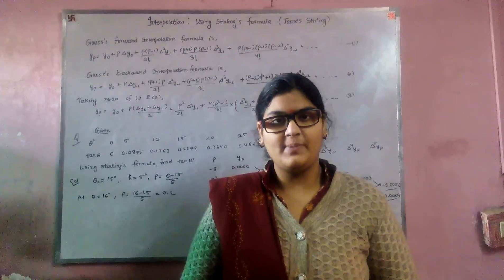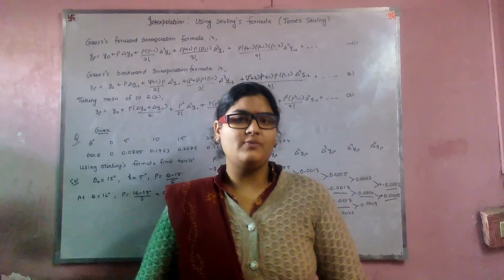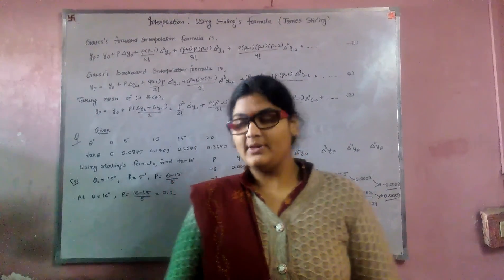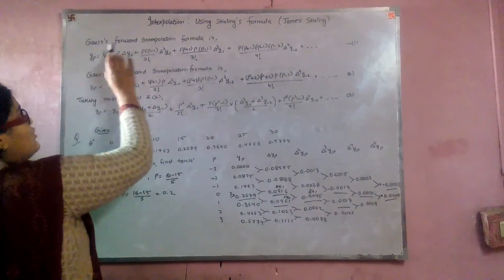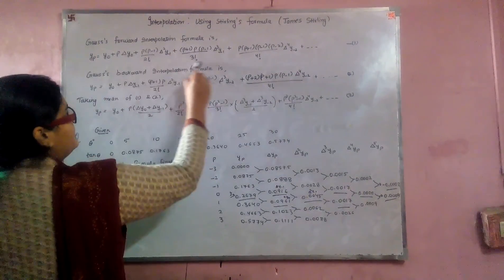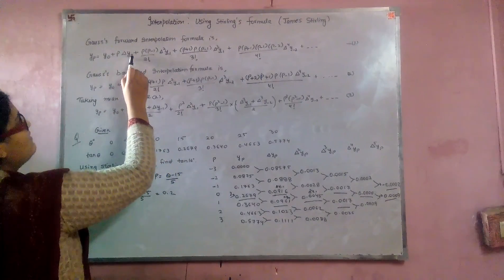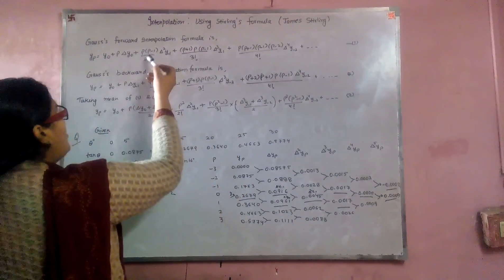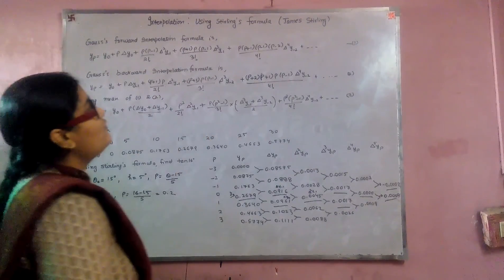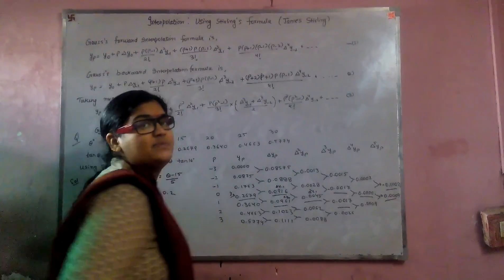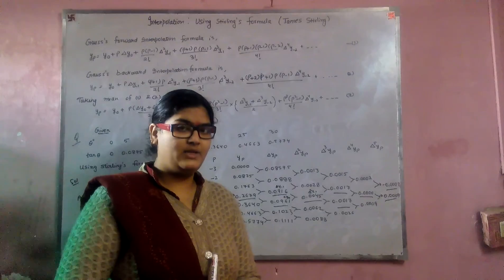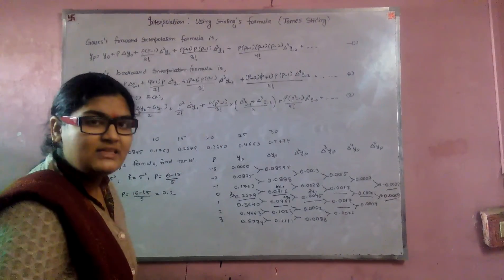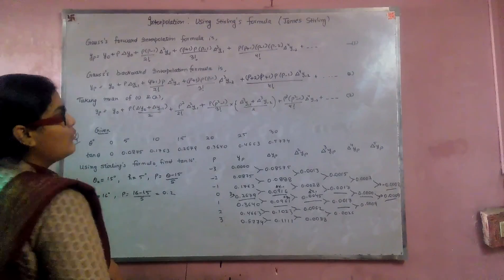Hello and welcome to my new video. In the last video we were discussing about interpolation, so we will proceed with that. Gauss's forward interpolation formula is yp = y₀ + p·Δy₀ + p(p-1)/2! · Δ²y₋₁ and so on, whereas Gauss's backward interpolation formula is also known. To find Stirling's formula — given by James Stirling, a Scottish mathematician — we take the mean of Gauss's forward and backward interpolation formulas.